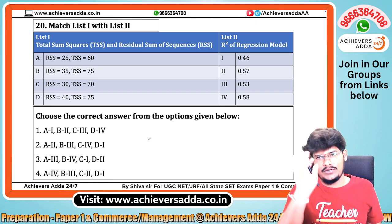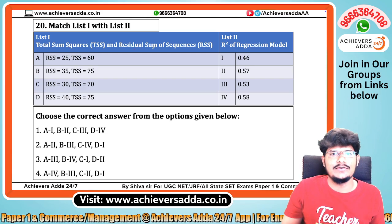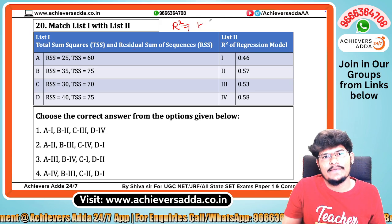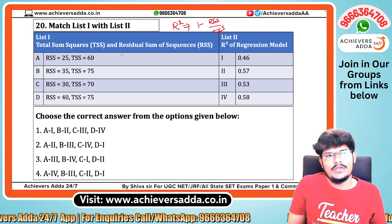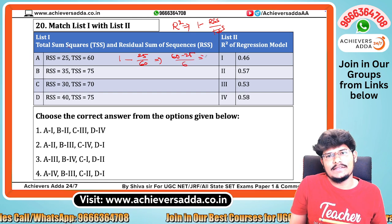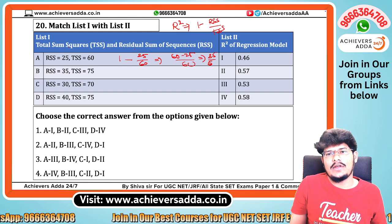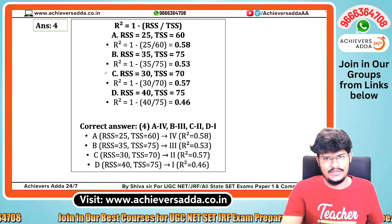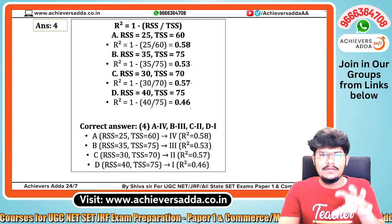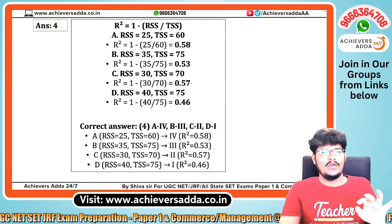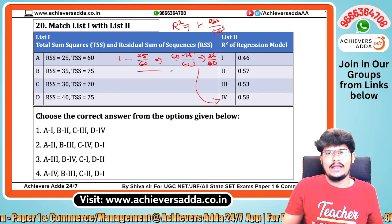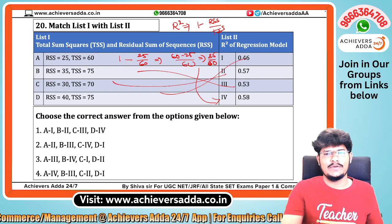One more question, asked only twice, involves the coefficient of determination. R-squared equals 1 minus RSS divided by TSS — the total sum of squares. Here, 1 minus 25 divided by 60 gives (60 − 25)/60 = 35/60 = 58%. Similarly the other values come out as 53%, 57%, and 46%. This is a matching-type question, so if you identify even one value, it is sufficient — the answer is option number 4.